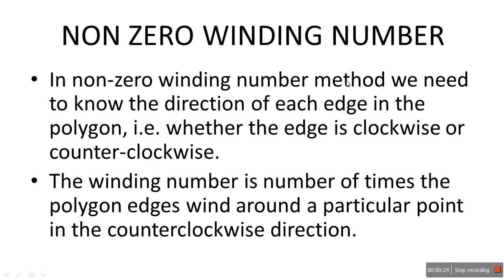In the non-zero winding number method, we need to know the direction of each edge in the polygon — that is, whether the edge is clockwise or counterclockwise. The winding number is the number of times the polygon edges wind around a particular point in the counterclockwise direction. So that is the definition of winding number.